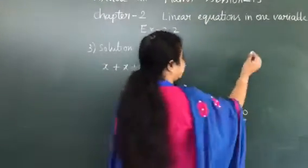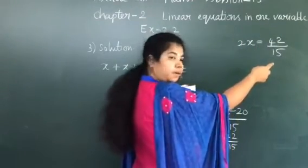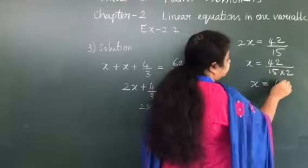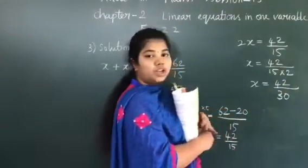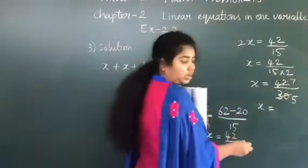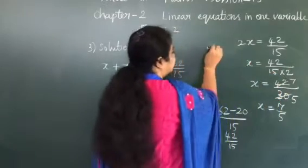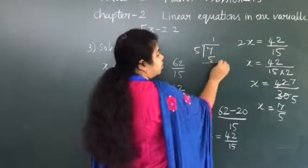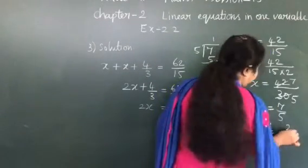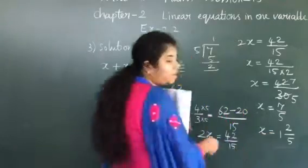Now, 2 is in multiplication on the left side. When it goes to the right-hand side, it becomes division. So x equals 42/15 divided by 2, which is 42/30. In the 6th table, 42 divided by 6 is 7 and 30 divided by 6 is 5. So x equals 7/5. You can also convert this improper fraction to a mixed fraction: 7 divided by 5 gives 1 with remainder 2, so x equals 1 and 2/5.